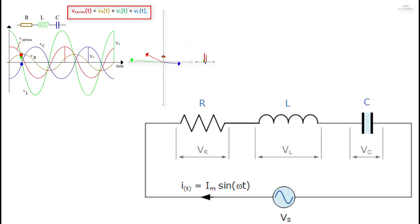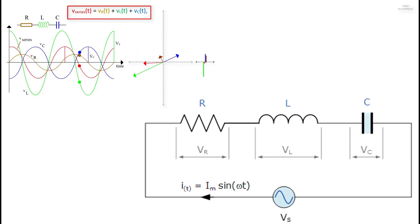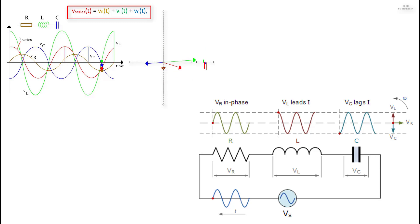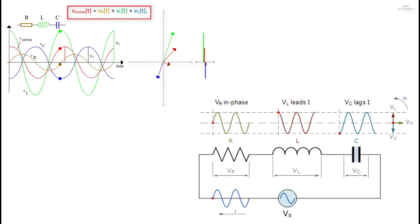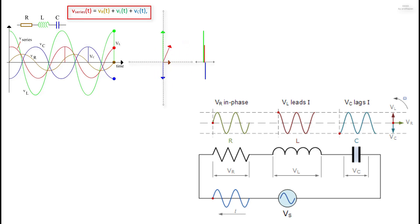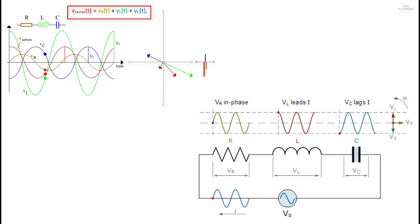For the series RLC circuit the amplitude of the source voltage across all three components is made up of the three individual component voltages VR, VL and VC, with the current common to all three components. The vector diagrams will therefore have the current vector as their reference, with the three voltage vectors being plotted with respect to this reference.